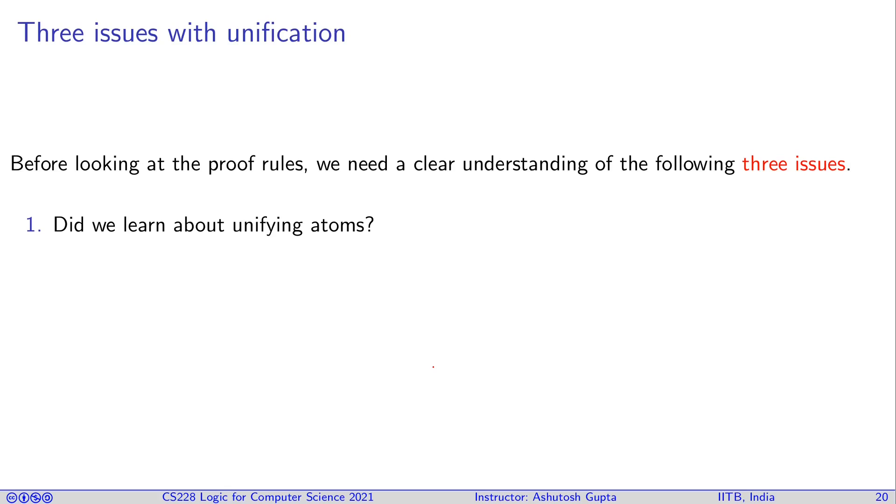Now the question comes, how do we apply unification in our clauses? So we were unifying terms earlier. Now I'm unifying atoms that looks weird. So we will think about it. Is substitution a valid operation for derivations? I mean, if we have some clause, which is for all where all the variables are universally quantified, suddenly you take a variable replaced by another term, is it allowed? And not only one variable you're doing from multiple variables at the same time, is it an okay derivation? So that we need to think about.